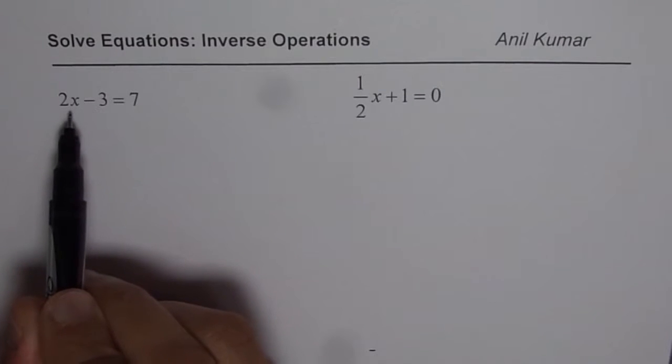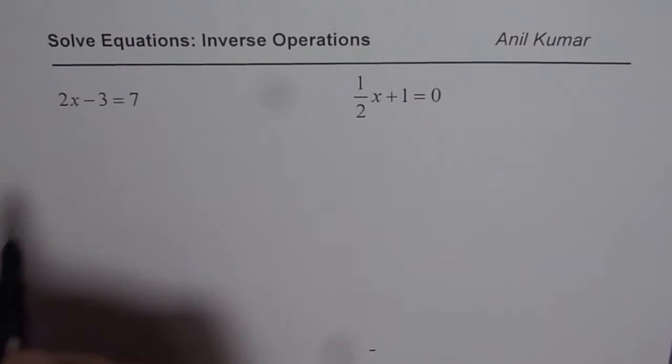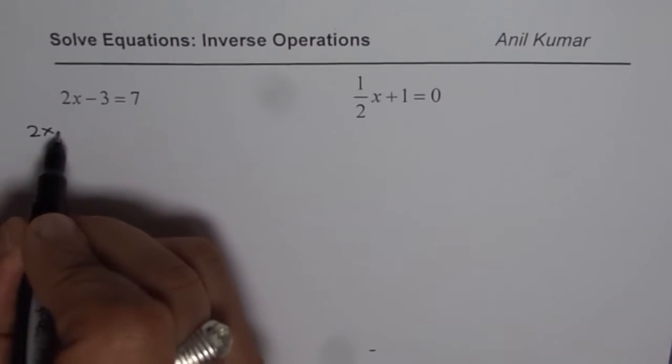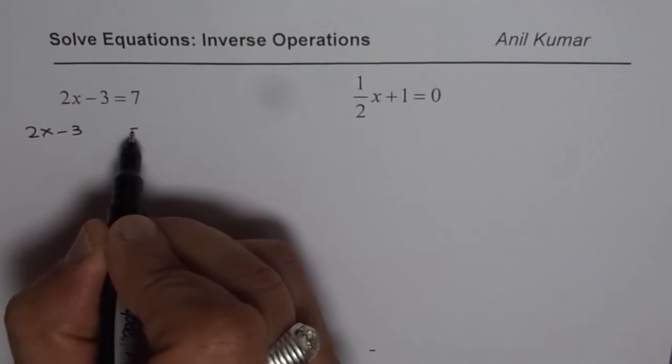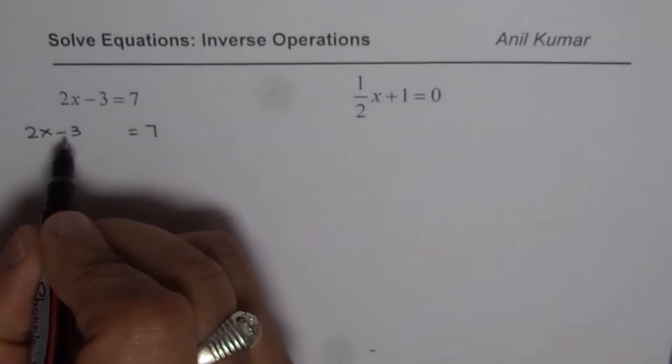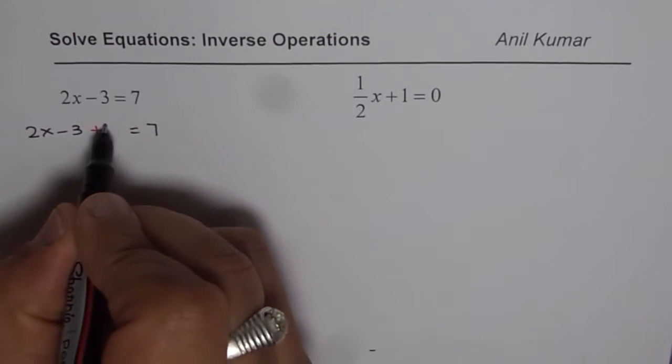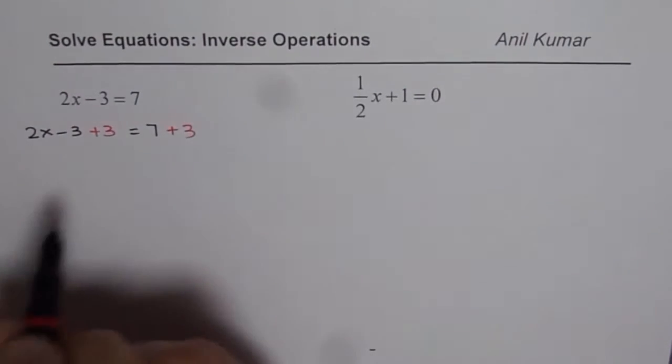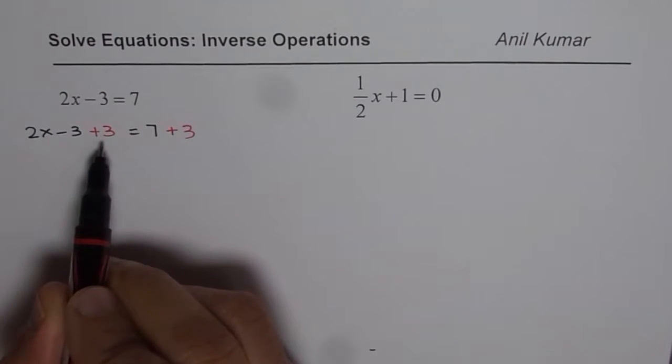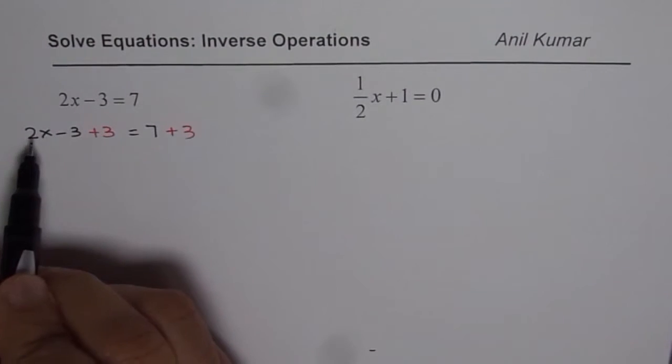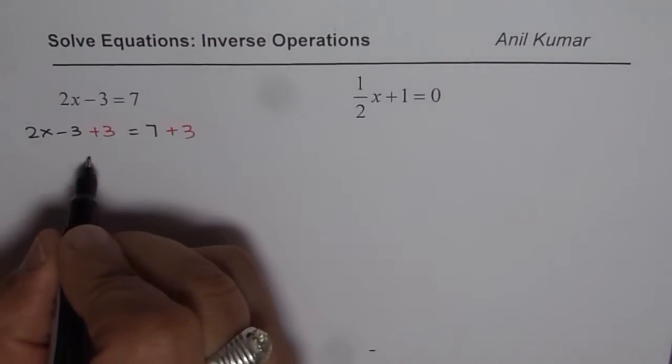We can do so by adding 3 on both sides. So in the first step we will copy the equation as such which is 2x minus 3 equals 7. And now to get rid of minus 3, the inverse of minus 3 is plus 3. So we will add plus 3 on both sides of equality. Whatever you do on the left side you have to do the same thing on the right side also.